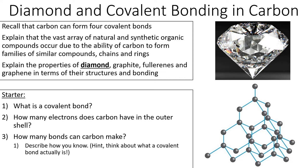First, I'd like you to do three very quick questions. Tell me what is a covalent bond. Tell me how many electrons does carbon have in the outer shell. Tell me how many bonds can carbon make. And with that final question, tell me how you know how many bonds carbon can make - think back to your earlier question: what actually is a covalent bond? Pause the video here and give yourself about three or four minutes to do those quick questions.